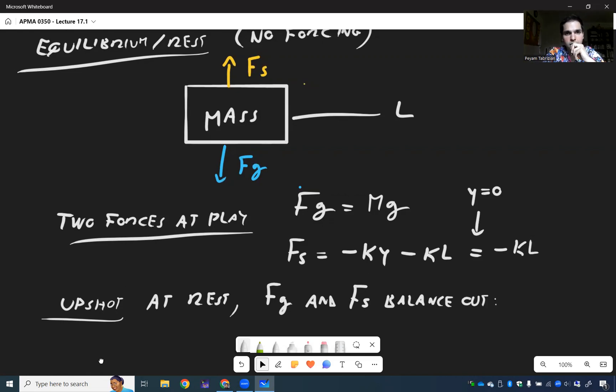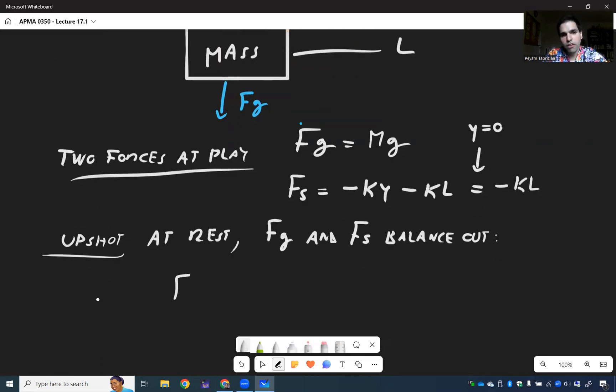So in other words, what this means is if you add both of them, you should get zero. And again, this just implies MG minus KL equals zero, so MG equals KL, which you will see is very good news because that means our equation gets satisfied.